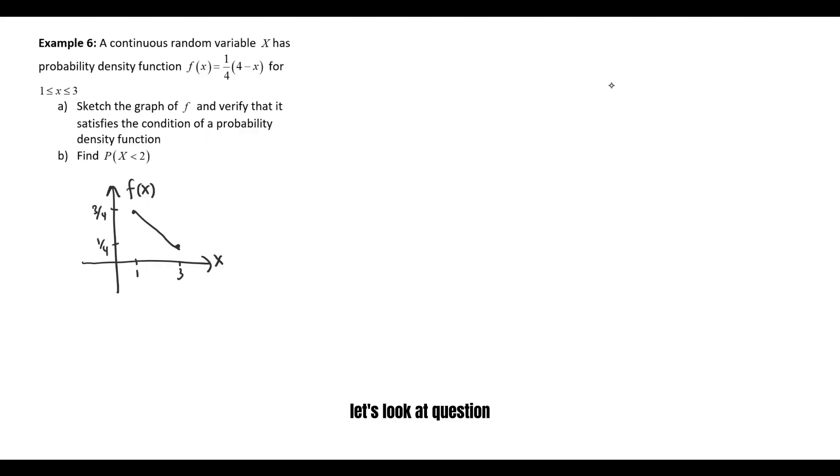Let's look at question B. We want to find the probability of X less than 2. By using the graph, we can see that 2 is between 1 and 3. Since the question wants to find the probability of X less than 2, it means we want to find the area under the curve between 1 and 2.